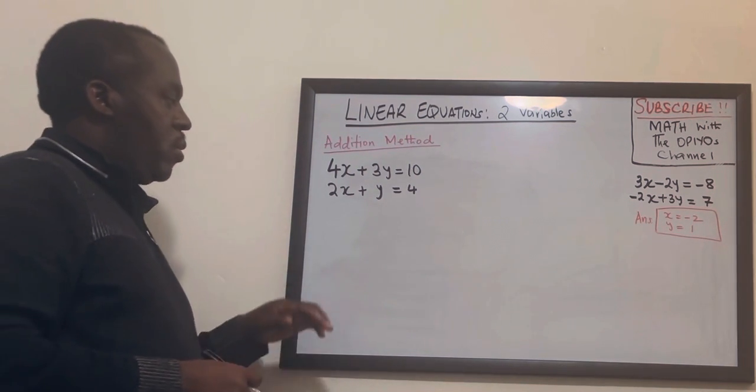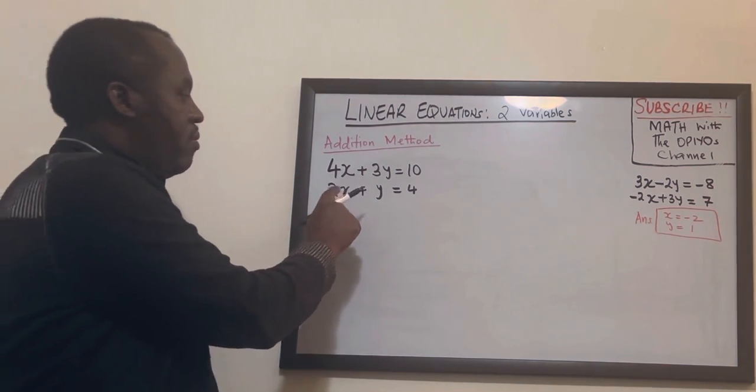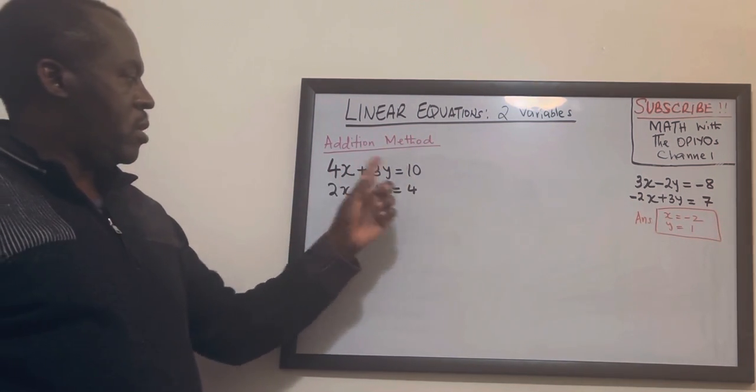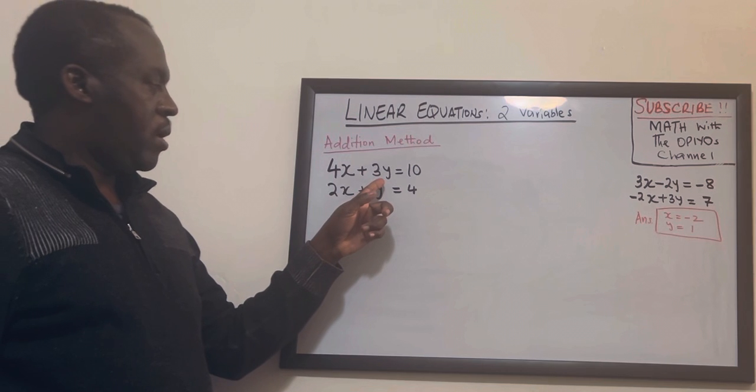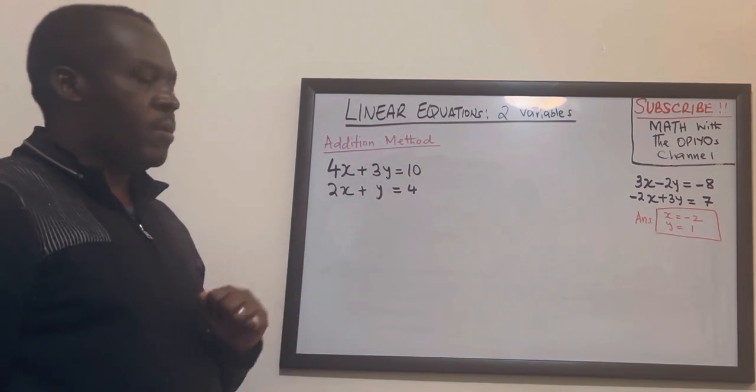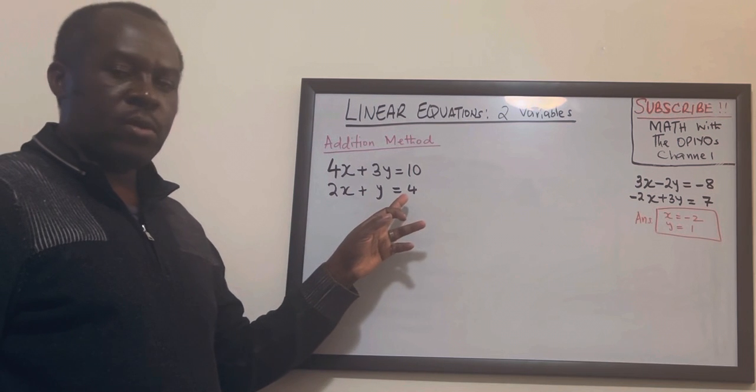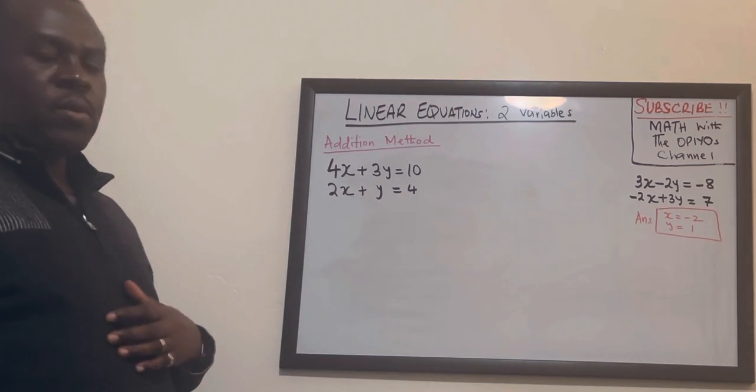So the two variables you have are x and y and you have two equations. The first one is 4x plus 3y equals 10, the next one is 2x plus y equals 4.